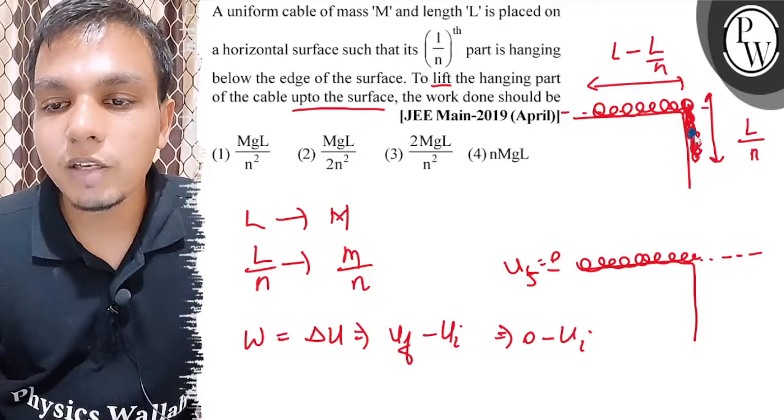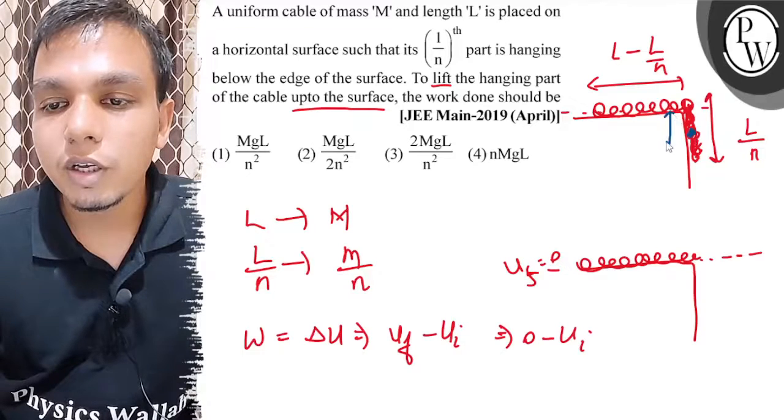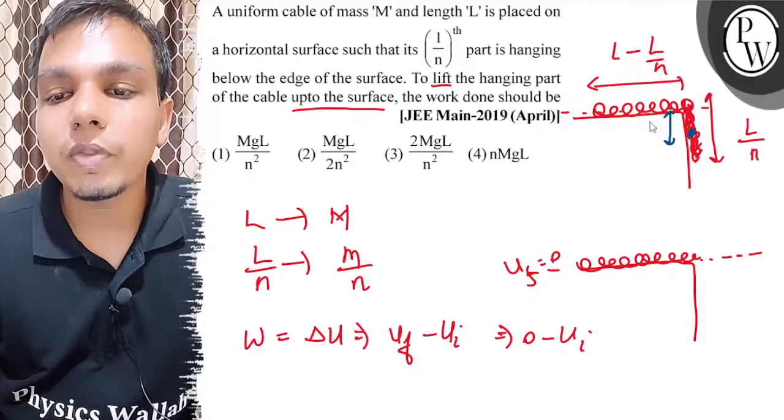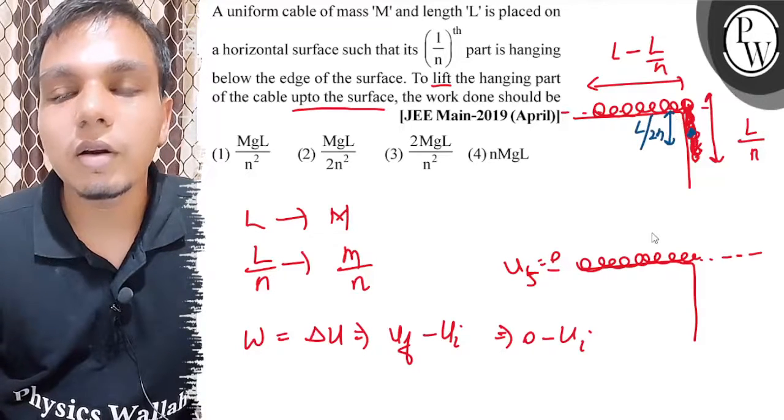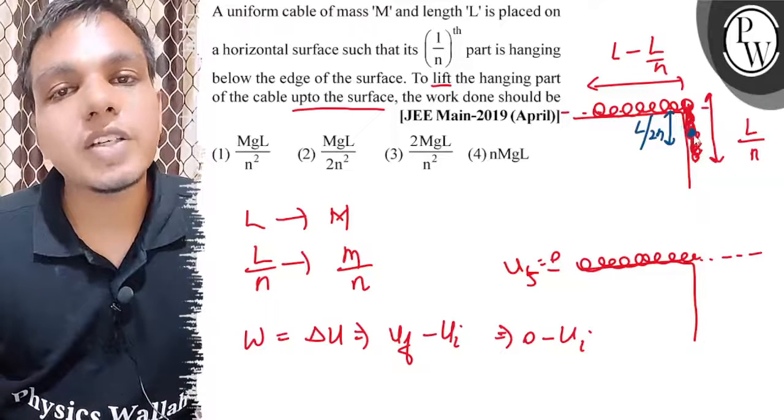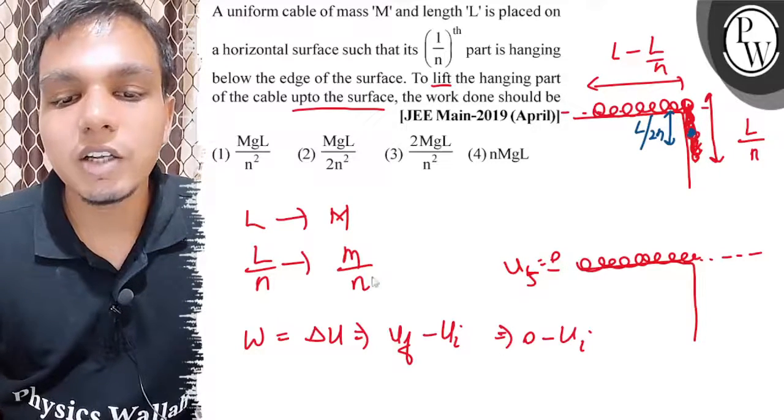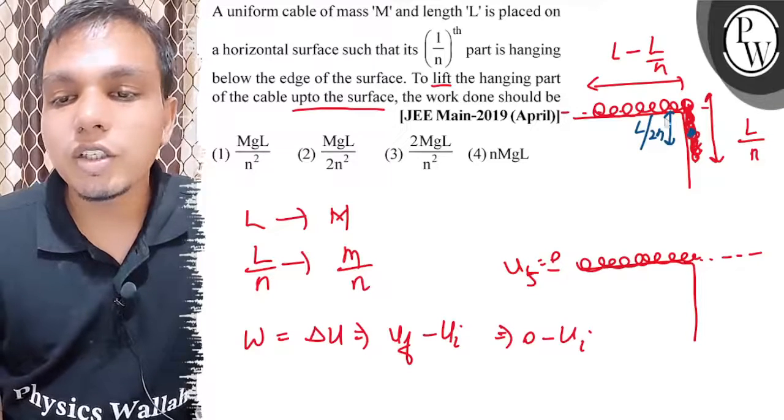Hanging part's potential energy we can write simply. We can assume this is total L/2N, because L/N length's center of mass is at L/2N, and mass we have is M/N. So potential energy is for the hanging part.